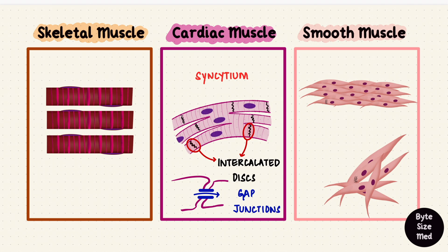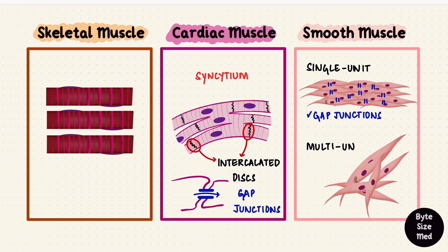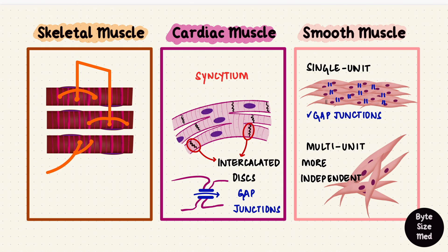Intercalated discs have gap junctions so that ions can spread from cell to cell, ensuring that they all depolarize together and contract together like a syncytium. Single unit smooth muscle cells also have gap junctions so they contract together as well, but multi-unit smooth muscles have few to no gap junctions so they contract more independently — as do skeletal muscles. They don't have gap junctions; each fiber has its own innervation. Those nerves are somatic nerves, and their axons branch at their termination, forming a junction with the muscle membrane called the neuromuscular junction.